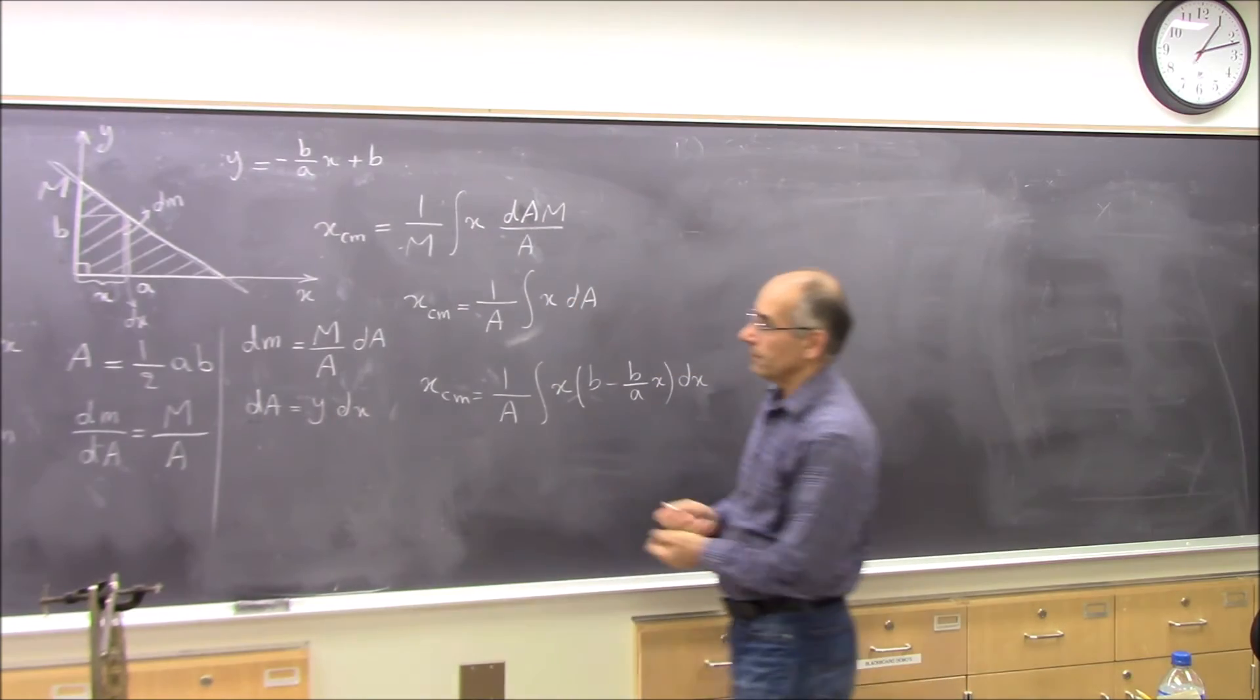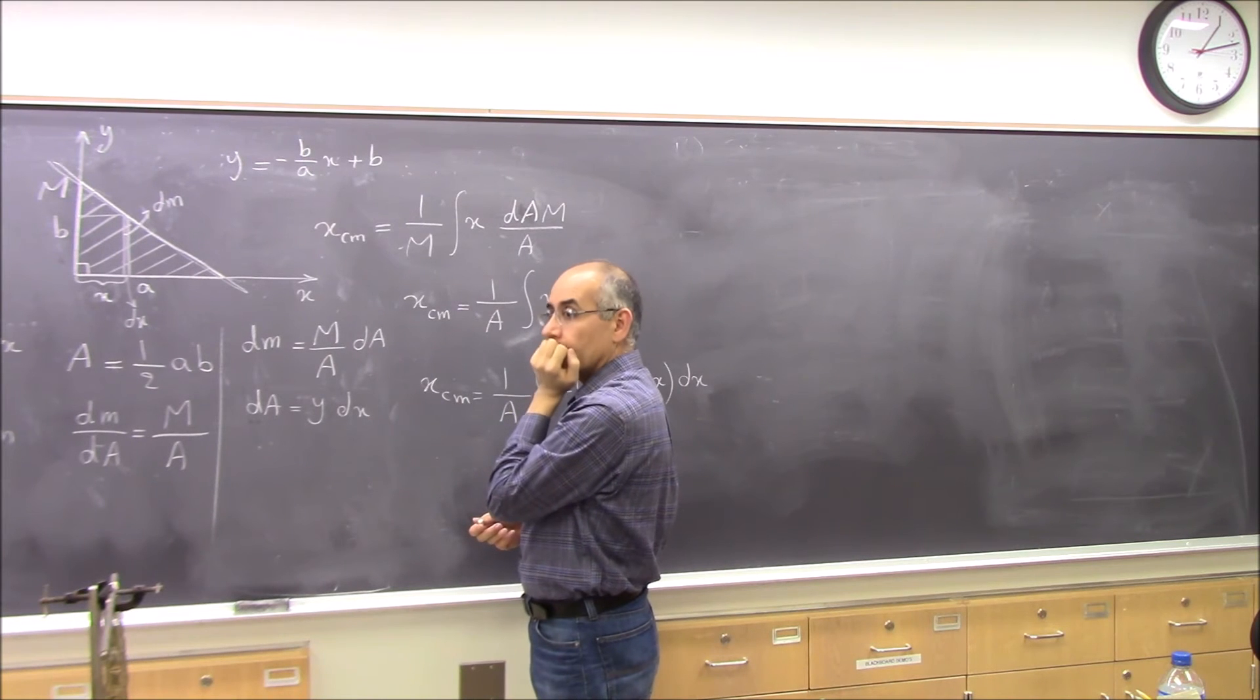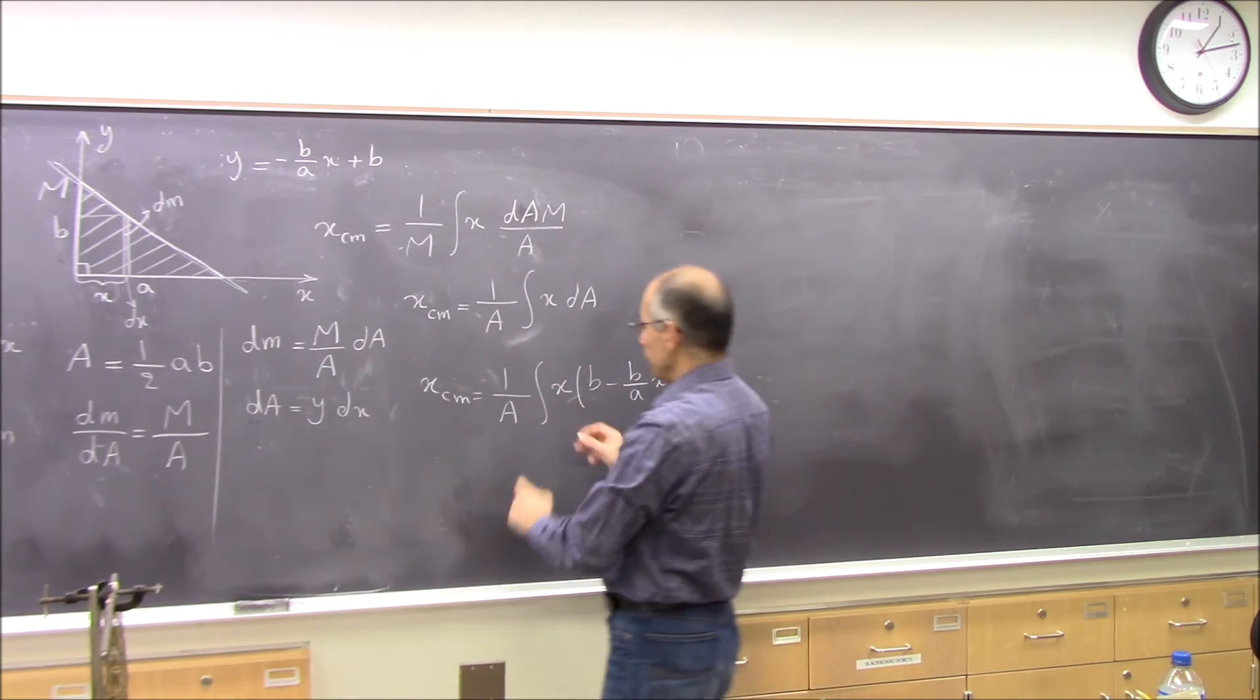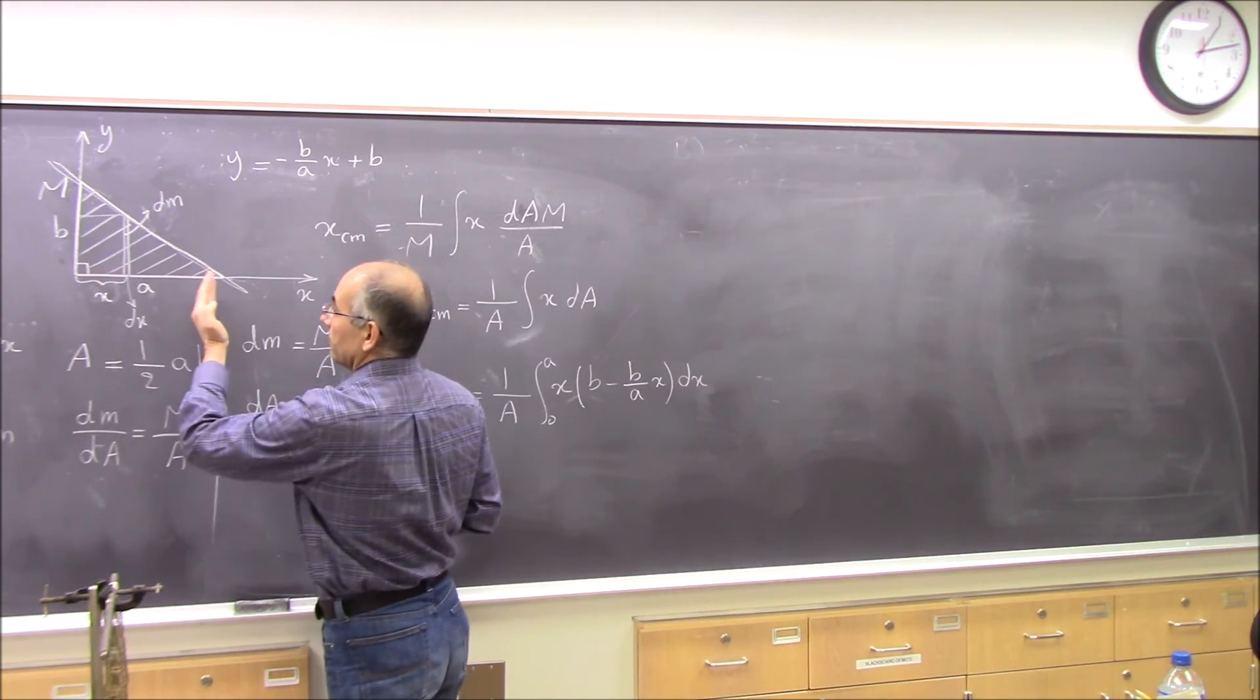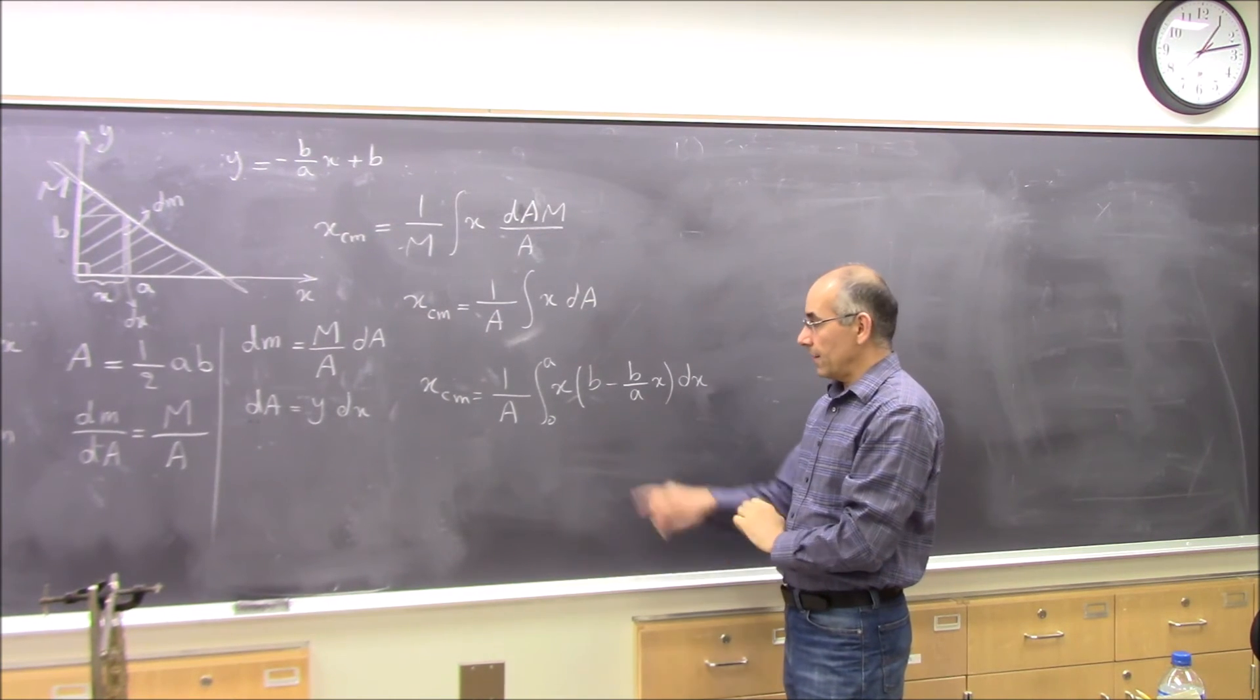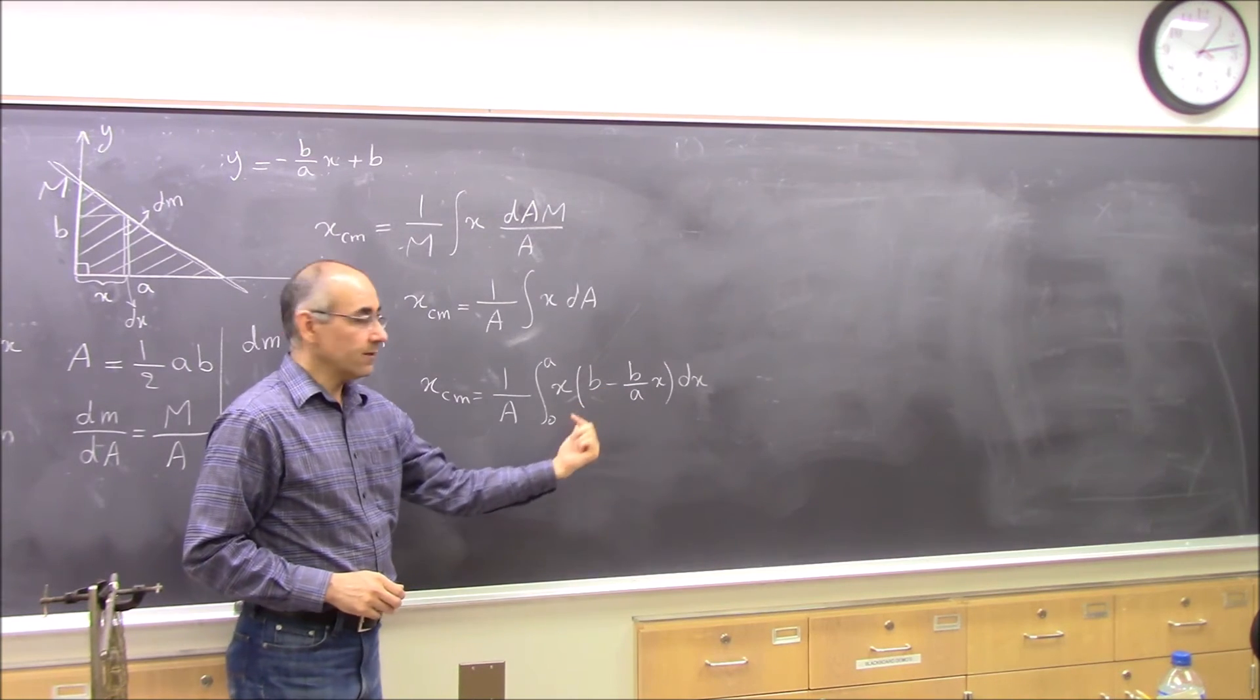I have a question. Could we just put y in and treat it as a constant instead of y? Instead of saying y equals negative b over a times x plus b, we just kept it as y, and then when we took the integral we treated y as a constant. Now y is not constant, because you see when x changes, x changes from 0 to a. When x changes in here, the height changes. Right, right. If it was a constant, then yeah, you could treat it as constant, but it's not constant.